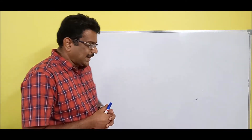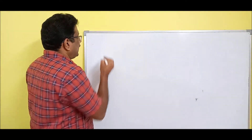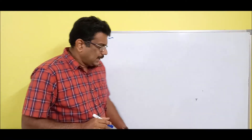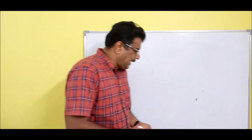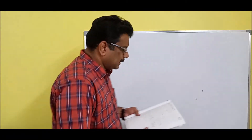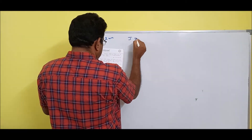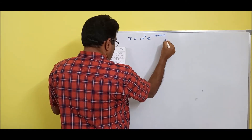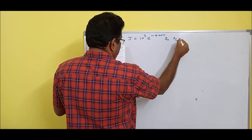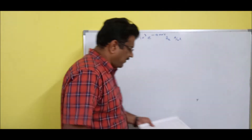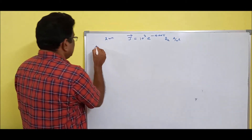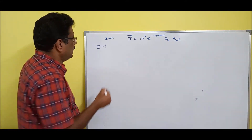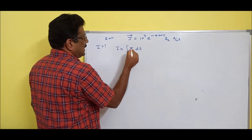In a cylindrical conductor of radius 2 millimeters, the current density is defined as J equal to 10³ e^(−400R) Az cap, in ampere per meter square. Find the total current. The formula is I equal to the integral of J dot dS.